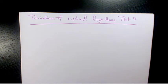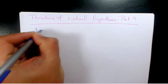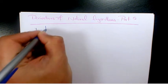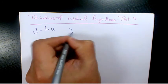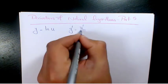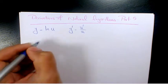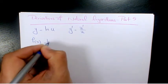What's up guys, this is Massey, welcome to another video. In this video I want to show you some other examples regarding finding the derivatives of natural logarithms. If we have y equals ln of u, and u is a function of x, then y prime, or the first derivative, is going to be u prime over u.